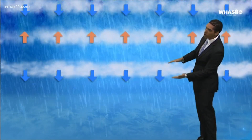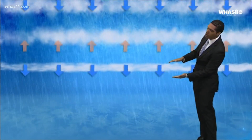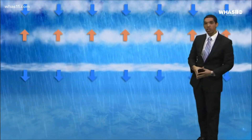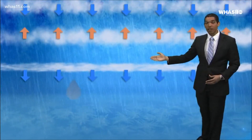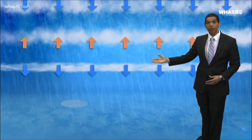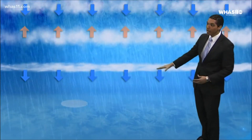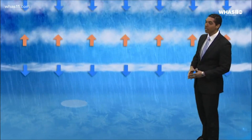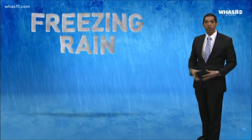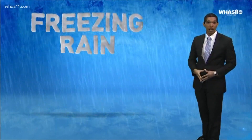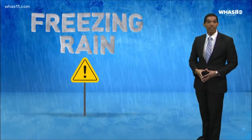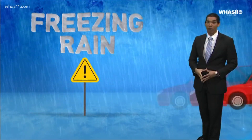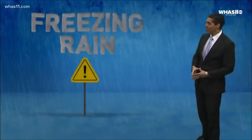However, if that layer of cold air towards the surface is much more shallow, that raindrop isn't going to have enough time to refreeze. It will land on the ground as a liquid, then refreeze, which can create a sheet of ice. That is much more dangerous and can lead to car accidents and power outages.